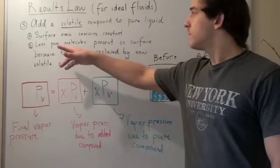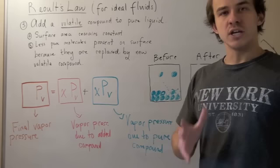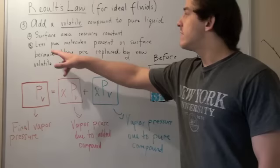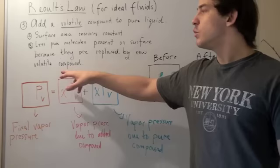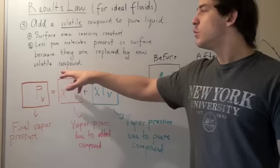Now let's look at the addition of a volatile compound to a pure mixture. A volatile compound is simply a compound that will evaporate. The surface area remains the same because our container does not change in shape or size — its cross-sectional area remains constant. And once again, we have fewer pure molecules found on the surface, because they're replaced by the new volatile compound.